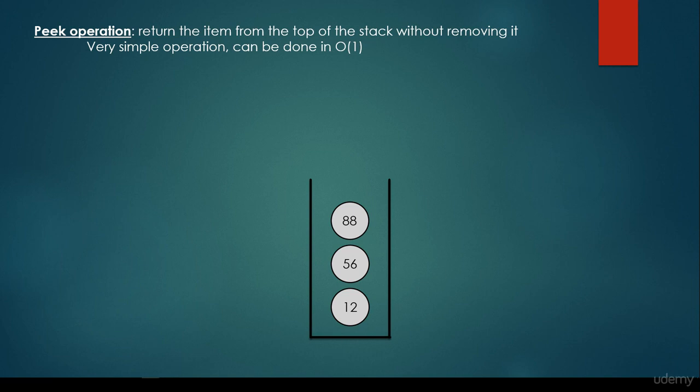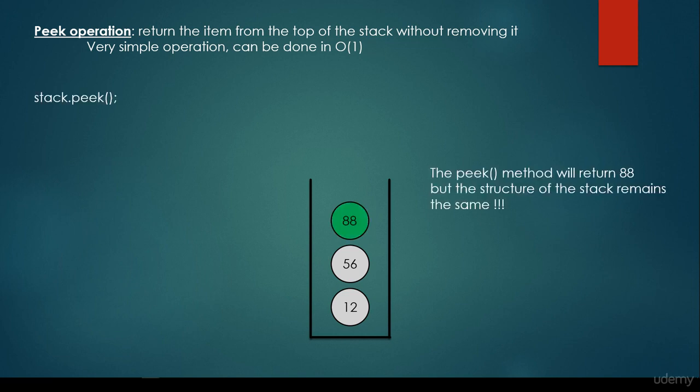So what about the peek operation? It's going to return the item from the top of the stack without removing it. It's again a very simple operation, it can be done in constant time complexity. So what's the difference between the peek and the pop method? The pop method is going to remove the last item from the stack. The peek method is going to return the value of the last item without removing it. So the size, the items in the stack is not going to change. So if we call the peek method, it is going to return 88, but the structure of the stack remains the same, which means that we are not going to remove 88. We're just going to take the value.